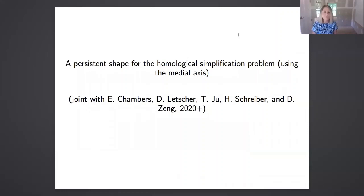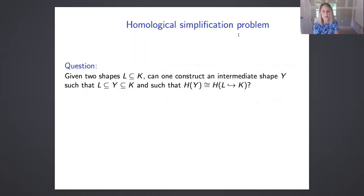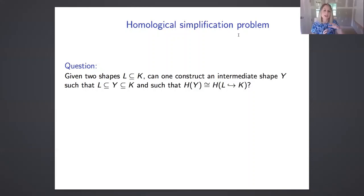Now I'm going to move on to the next topic. This is joint work with Erin Chambers, David Letcher, Tao Ju, Hannah Shriver, and Dan Zhang. This is very much ongoing preliminary work. The topic is persistent shape for the homological simplification problem using the medial axis. The homological simplification problem asks: given two shapes — or simplicial complexes — L a subset of K, can you find an intermediate shape Y such that the homology of Y is isomorphic to the homology of the inclusion of L into K? In other words, can the persistent homology group of the pair L and K be realized as the homology of some intermediate shape?